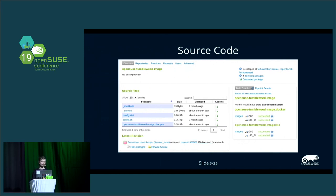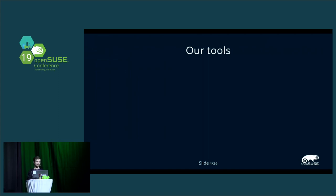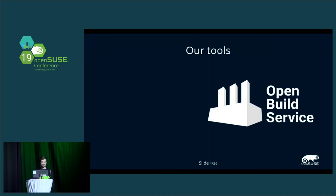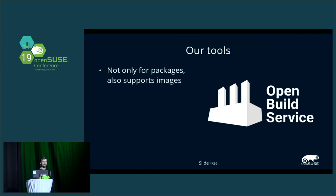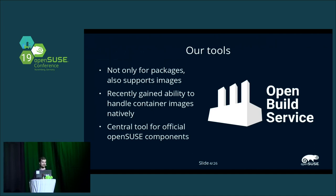This is how such an image looks in OBS. You can see some files there, and on the right side you see some builds which luckily succeeded. That's how the behind-the-scenes stuff works. As you can already see, we're using the OpenBuild Service, of course. It's not only used for packages, but also supports images. You probably used OBS for downloading RPMs, but it can also handle building images and pulling in dependencies. It's the central tool to develop OpenSUSE — every distro you can find for OpenSUSE is built on the OpenBuild Service.